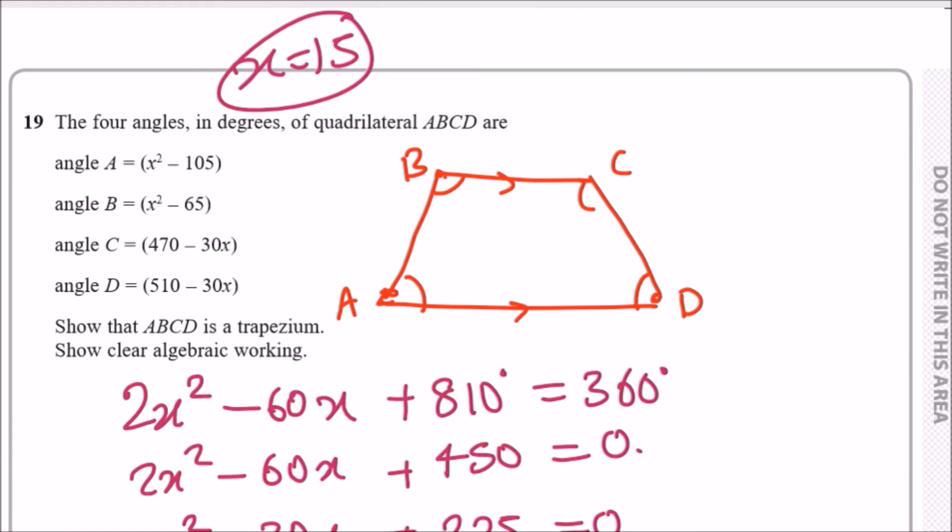Next one is going to be 15 squared minus 65, which is 160. So these two don't pair up, so let me just go ahead and clear this out.